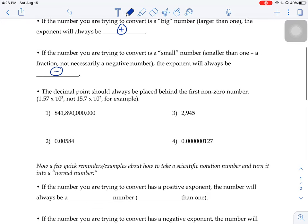One other little reminder, when you take a number and put it into scientific notation, the best place to put that decimal point is behind the first non-zero number. So as an example...